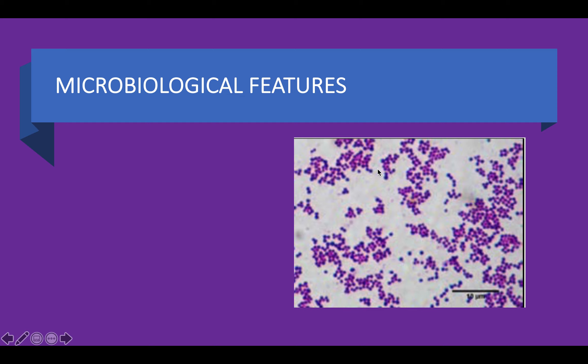On screen you can see what Staphylococcus aureus would look like under a microscope. You can see that they're gram-positive because, when we think about gram-positive, we think about a purple colour — hence why it's labelled purple. Always think Staphylococcus aureus is gram-positive because of the purple background.